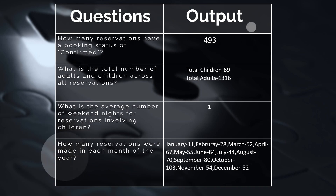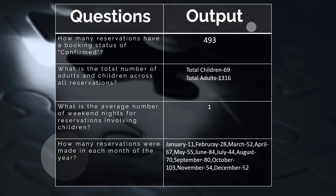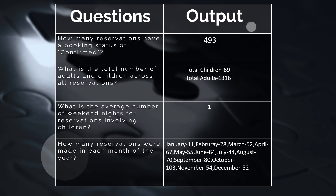Question 9 — reservations with a booking status of confirmed: answer is 493. Question 10 — total number of adults and children across all reservations: total children is 69, total adults is 1316. Question 11 — average number of weekend nights for reservations involving children: answer is 1. Question 12 — reservations made in each month: January is 11, February is 28, March is 52, April is 67.